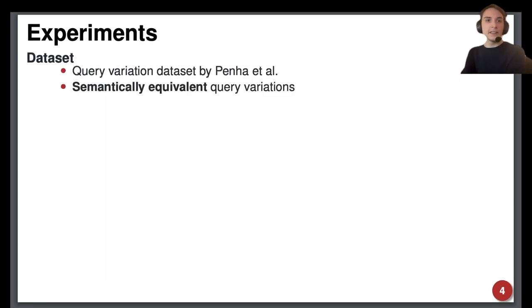For our dataset, we chose a query variation dataset by Peña et al. since it is the only variation dataset available that ensures identical semantics between the query and its variants. Other query variation datasets like UQV100 usually contain queries that express the same information need, but not the same semantics.